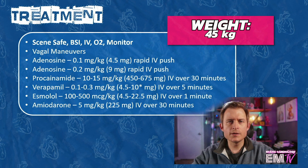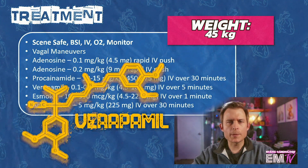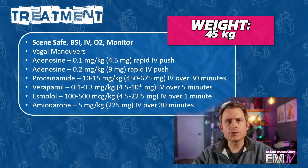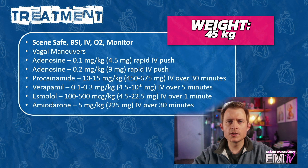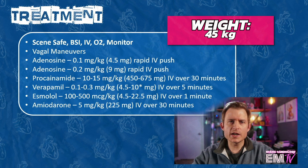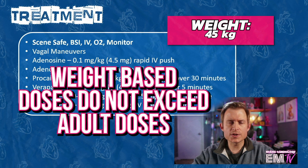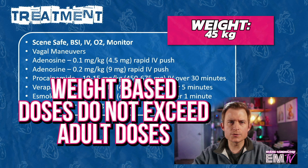Alternatively, verapamil can be given. Verapamil is a calcium channel blocker. The dosing here is 0.1 to 0.3 mg per kg, which works out to 4.5 to 10 mg. Why 10? Because 10 is the maximum single allowable dose. And remember, with pediatric weight-based dosing, you do not exceed adult doses.